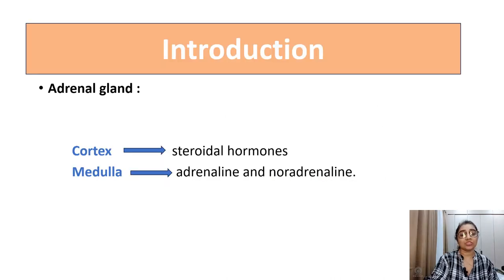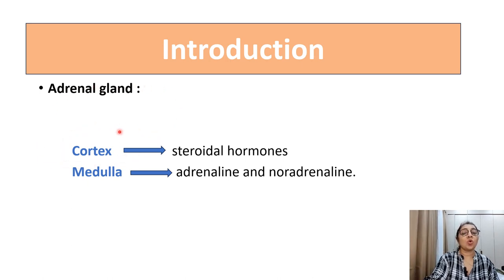So what is corticosteroid? Corticosteroid is the steroid which is released from the cortex of the adrenal gland. The adrenal gland has two parts: cortex and medulla. The cortex releases steroidal hormones, and the medulla releases adrenaline and norepinephrine.